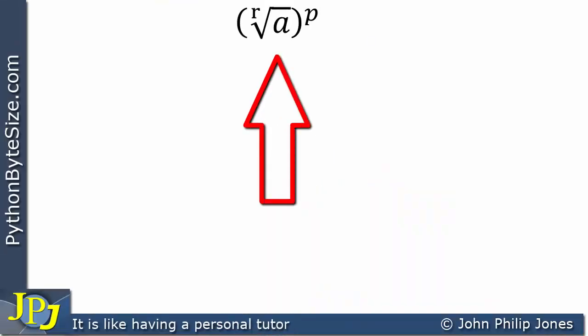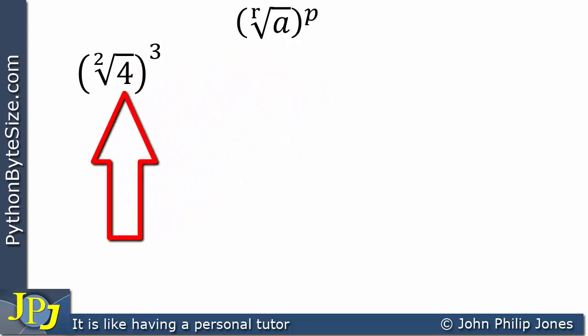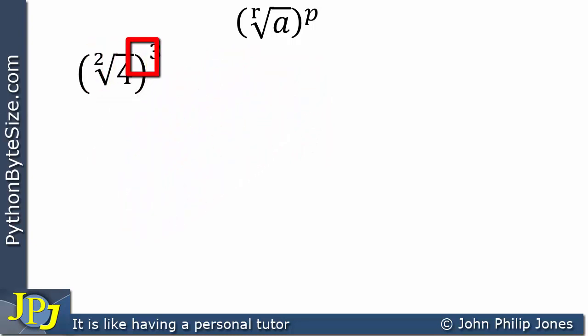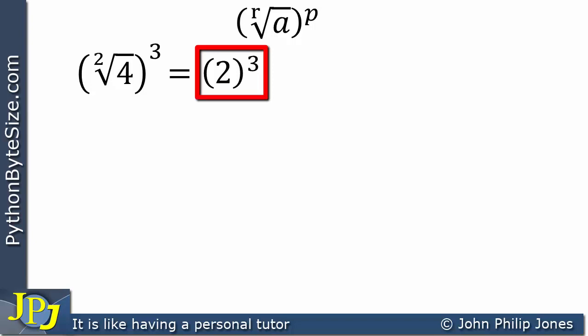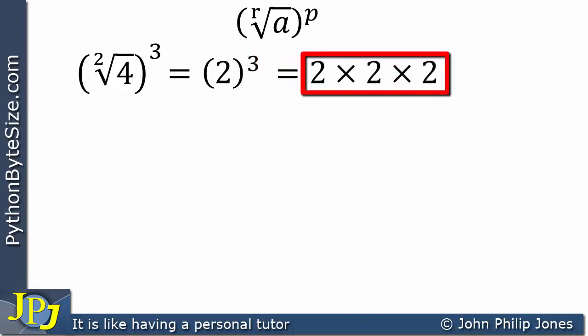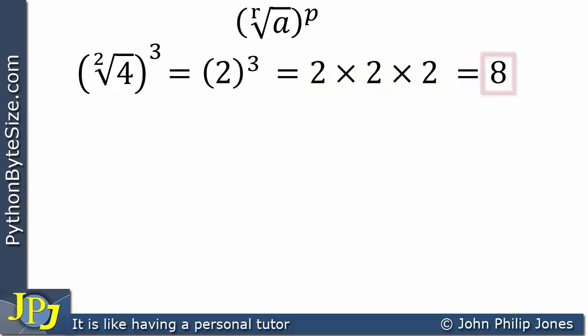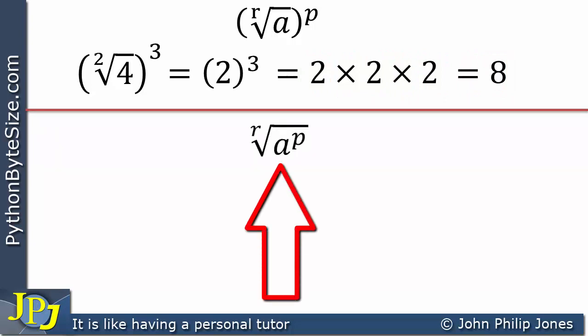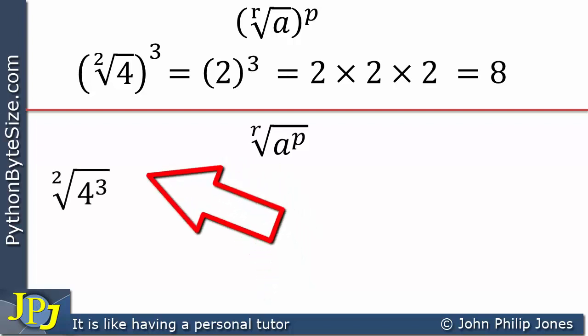Let's consider a concrete case: base 4, taking the square root first and then cubing the result. The square root of 4 is 2, and cubing 2 means writing 2 three times and multiplying them together, giving the value of 8.